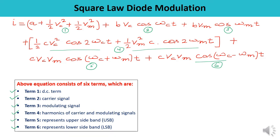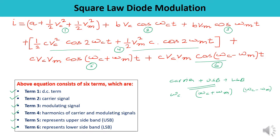As discussed, the output of the tuned circuit is carrier plus upper sideband plus lower sideband, since the tuned circuit responds to a narrow band of frequencies centered about the carrier frequency ωc. So what we get at the output corresponds to ωc (carrier), ωc + ωm (upper sideband), and ωc − ωm (lower sideband). The output current equation is thus the sum of terms two, five, and six.